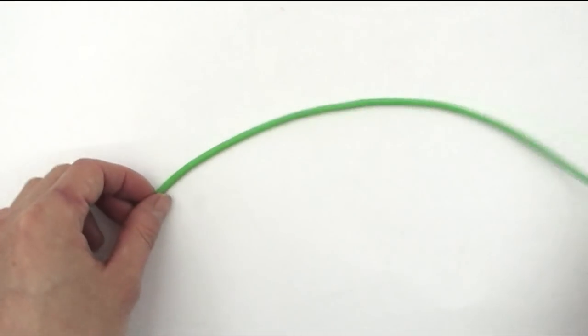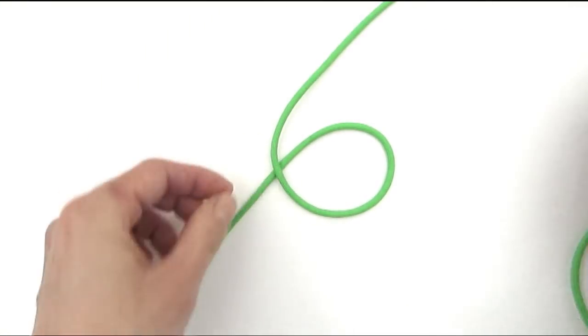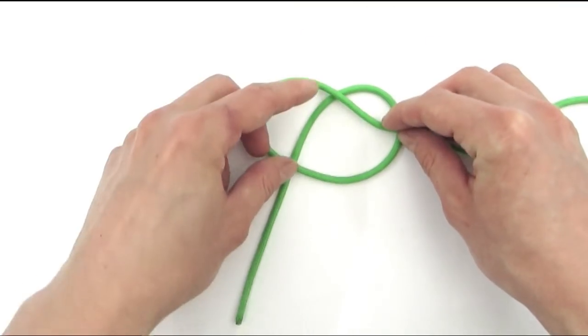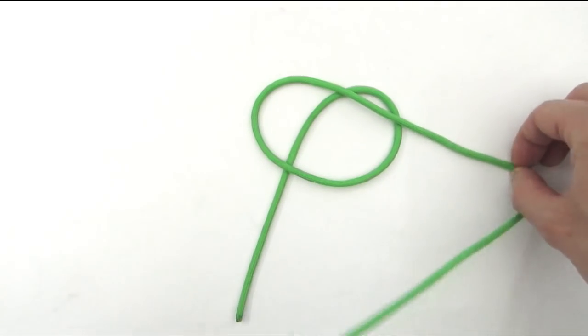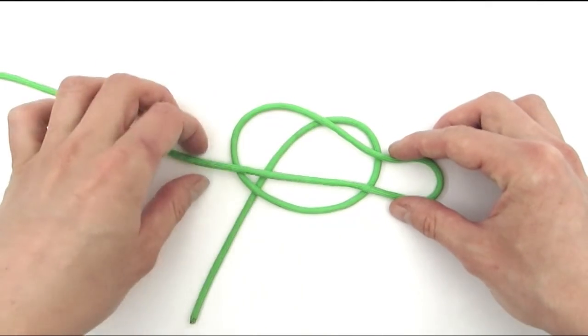So here you can see my cord and I'm going to start with my right end and make a loop. Then go over this loop using my working end, so over 2 at the top here and then over this loop again, over 2 at the bottom.